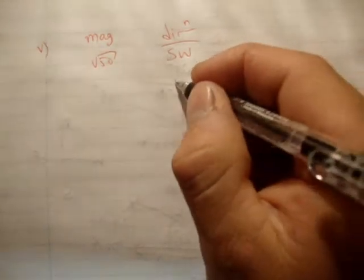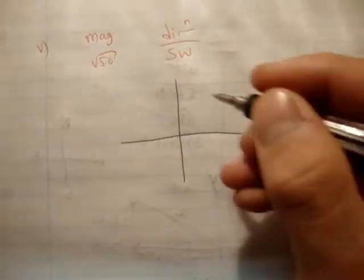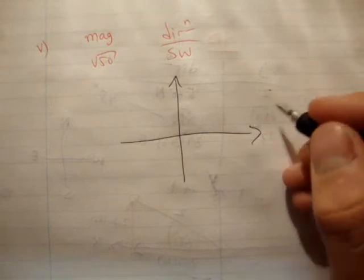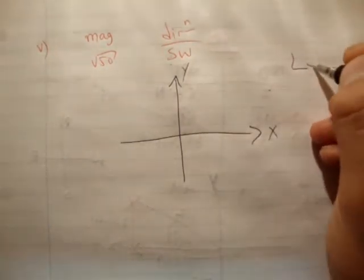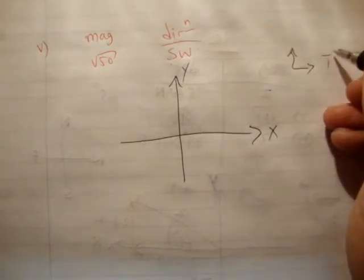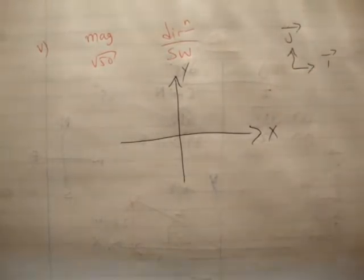We'll do part 5. You have a magnitude of root 50 and a direction of southwest. Draw your vector by drawing your xy plane or your xy axis, or your Cartesian plane. Define your unit vectors, i-hat and j-hat.